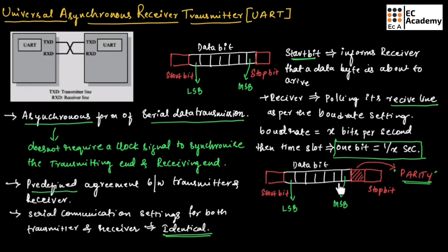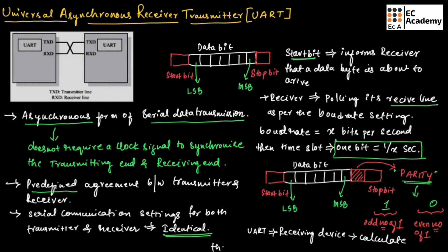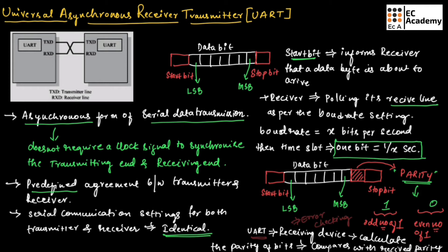During data communication, along with the data bits, start bit, and stop bit, a parity bit will also be added. This parity bit will have the value 1 or 0 depending upon the number of 1s in the bits that are transmitted — value 1 for an odd number of 1s and value 0 for an even number of 1s. The UART of the receiving device will calculate the parity of the received bits and compare it with the received parity to check for errors.